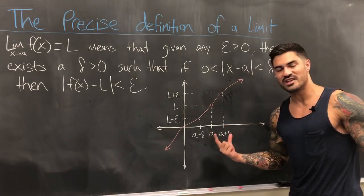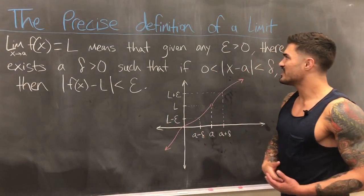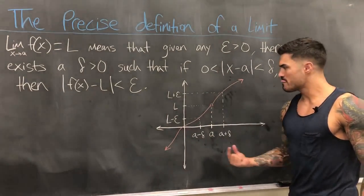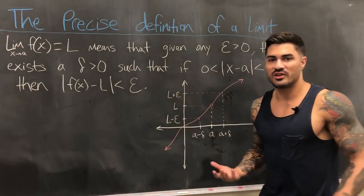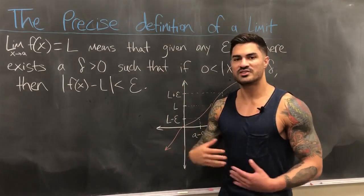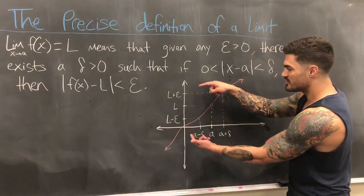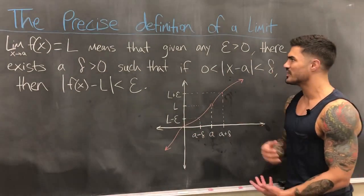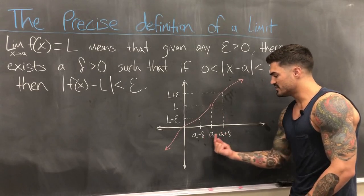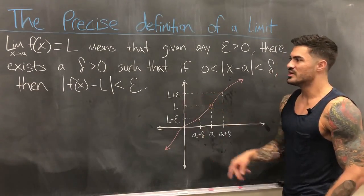Given any epsilon greater than zero — I think of it as a requirement for closeness — we can get as close as we want to L. Given any requirement of closeness, there exists some delta greater than zero such that if X is within delta distance of a, f(x) is within epsilon distance of L. As epsilon changes, the delta has to change too — that's why delta ends up being something in terms of epsilon, like epsilon over five.